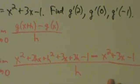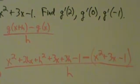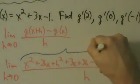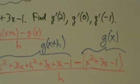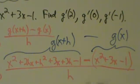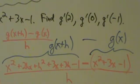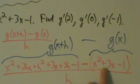Be very careful here: we're subtracting all of g(x), so we must put parentheses around it. This whole expression is g(x+h), and this whole part is g(x), and we're doing g(x+h) minus g(x). The parentheses are absolutely necessary — if you leave them off, terms won't cancel correctly and you'll know something went wrong. To drop the parentheses, we distribute the minus sign, making it minus x² minus 3x plus 1.